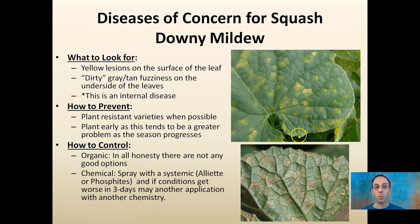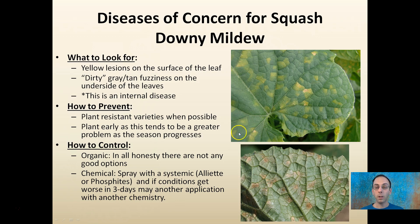Downy mildew is a much more severe one. It produces yellow lesions on the surface, and the underside will be a gray, tan fuzziness. What makes this worse than powdery is that powdery lives on the surface of the leaves, whereas downy is an internal disease. Planting resistant varieties and planting early in the season can help you get by potential late-season downy mildew threats, because that's where it's more common to occur.